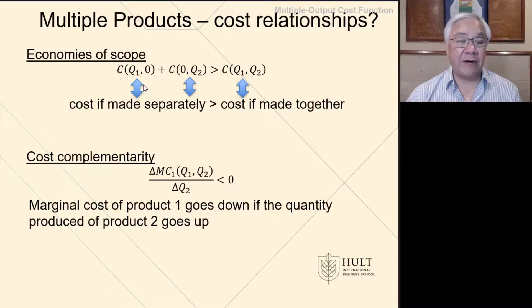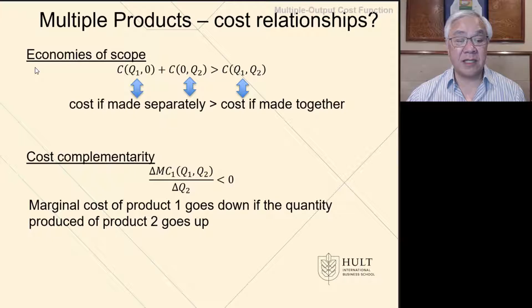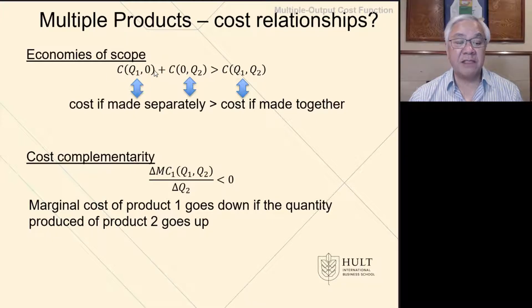So let's look at a multiple product scenario where we have Q1 and Q2, quantity of 1 and quantity of 2. Here we can quantify what economies of scope looks like. So here we have the cost of making Q1 by itself, the cost of making Q2 by itself. And if the sum of those is greater than the cost of making them together, then we know that there's an opportunity for economies of scope, because doing them together has a lower cost than doing them separately.